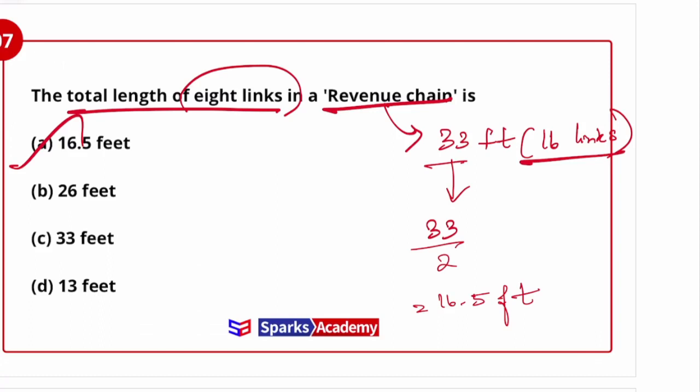For Ganda chain or engineering chain, there are 100 links. Questions can be asked about the number of links in different chains.